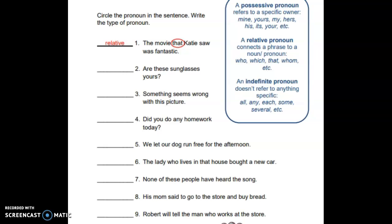Okay boys and girls, you just watched a video about pronouns and you've probably had a little bit of practice with the Kahoot — that's if you went out of order, but it's okay. So let's look here: there are seven different types of pronouns, but for today we are going to be focusing on possessive pronouns, relative pronouns, and indefinite pronouns.